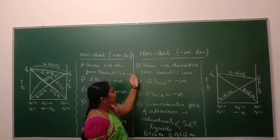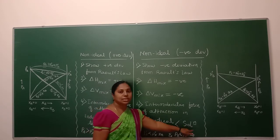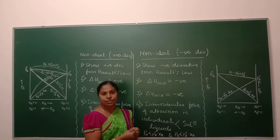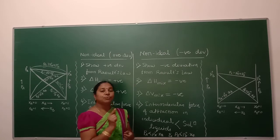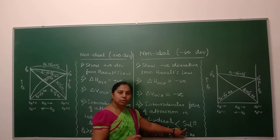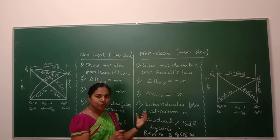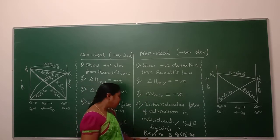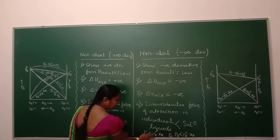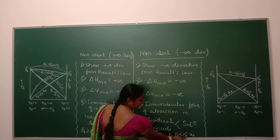Similarly, in case of a non-ideal solution with negative deviation, the intermolecular force of attraction in the individual liquids is less compared to that in the solution. Since the particles in the solution are held together by a strong force of attraction, only few particles will move from liquid into the vapor phase, so that the pressure obtained is less compared to the pressure from Raoult's law. Thus, PA < P°A·XA and PB < P°B·XB.